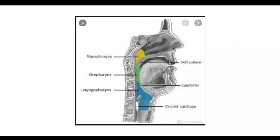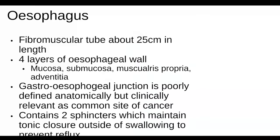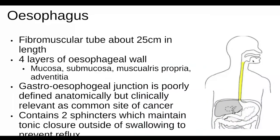The pharynx — another word for throat — is divided into three regions: the nasopharynx, where the nasal cavity joins the back of the mouth; the oropharynx, straight from the mouth to the back of the throat; and the laryngopharynx, where the larynx (voice box) is located. Moving on, the oesophagus is a fibromuscular tube approximately 25 centimetres in length.